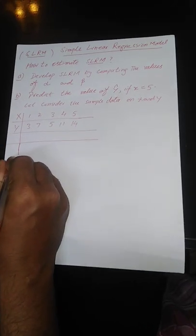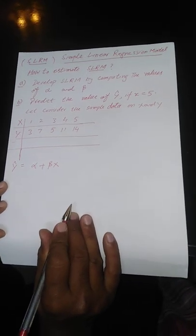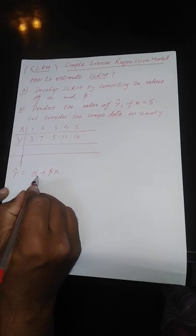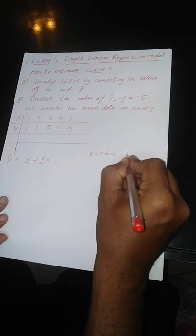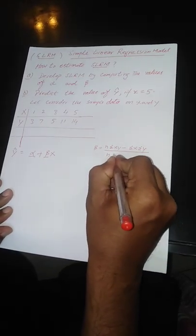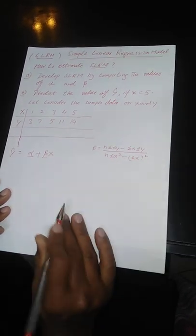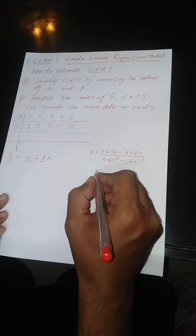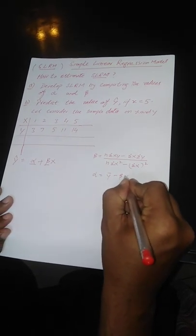Our regression model is equal to alpha plus beta x. Our objective is to solve these parameters alpha and beta. Beta is equal to n·Σxy minus Σx·Σy, over n·Σx² minus (Σx)². And alpha is equal to ȳ minus beta·x̄.